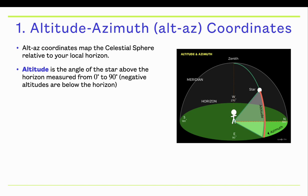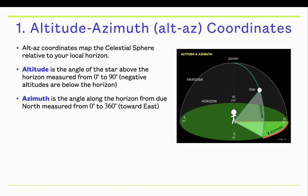Altitude is the angle that a star is above the horizon. Zero degrees altitude would be on the horizon. Ninety degrees would be at the zenith, which is the point straight above your head. Negative altitudes would be below the horizon. Azimuth is the angle measured from due north in an eastward direction. So zero degrees azimuth points towards the north, and as you increase the azimuth, east would be 90 degrees, south is 180, and west is 270.